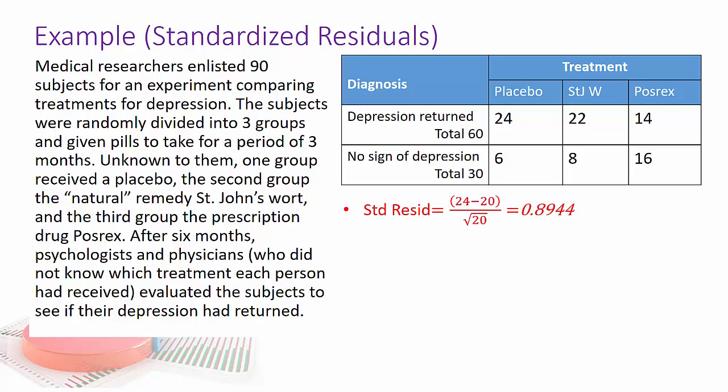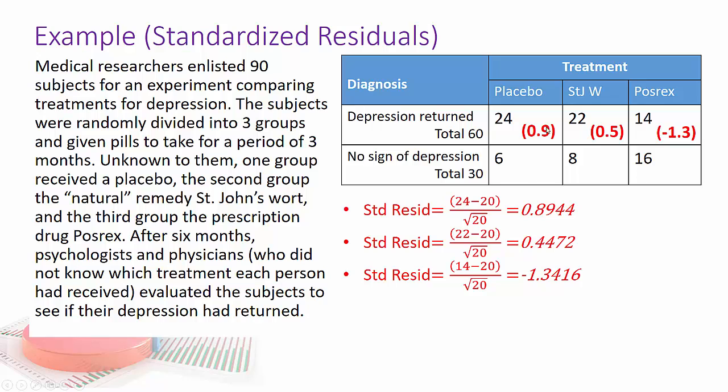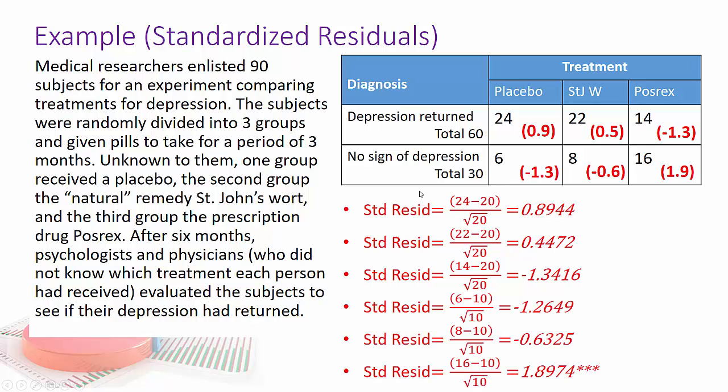For the first cell, 24 minus 20 divided by square root of 20, 22 minus 20 divided by the square root of 20, and 14 minus 20 divided by the square root of 20. You can see these two are above the 20, these two are below, this one's below the 20. Then doing the next row, you can see that the biggest value really contributing is right here.